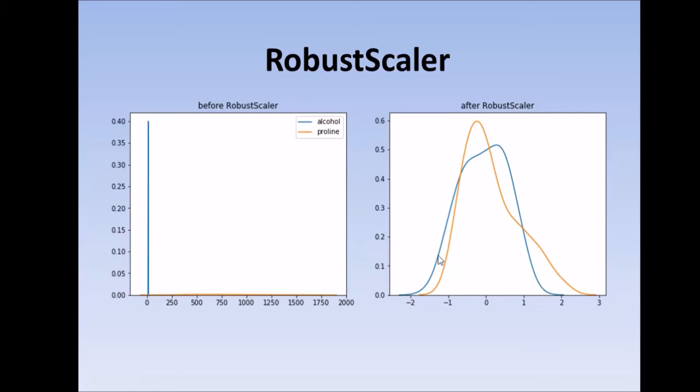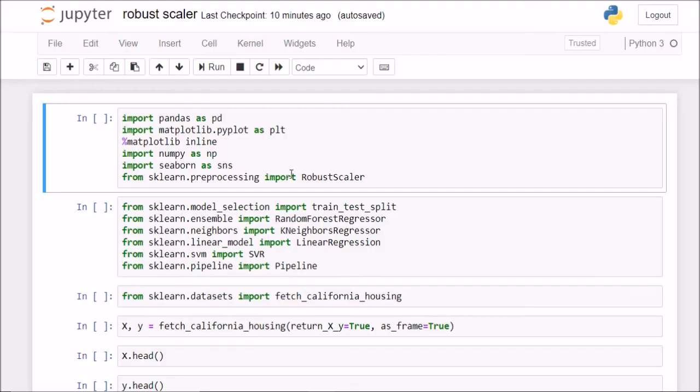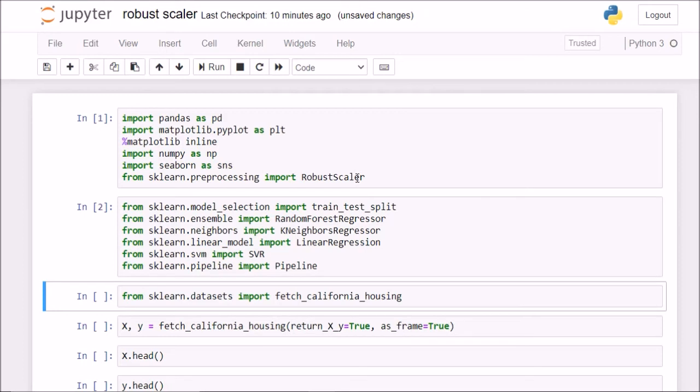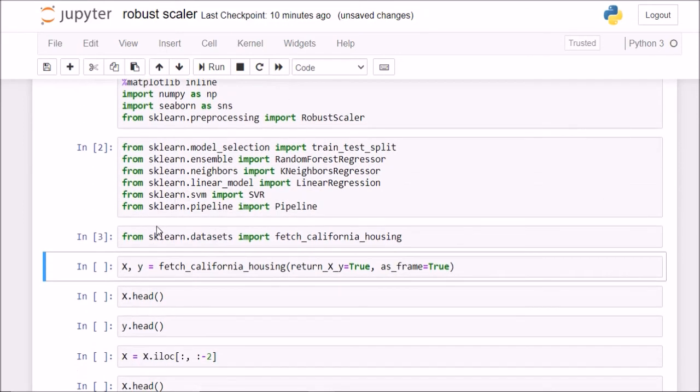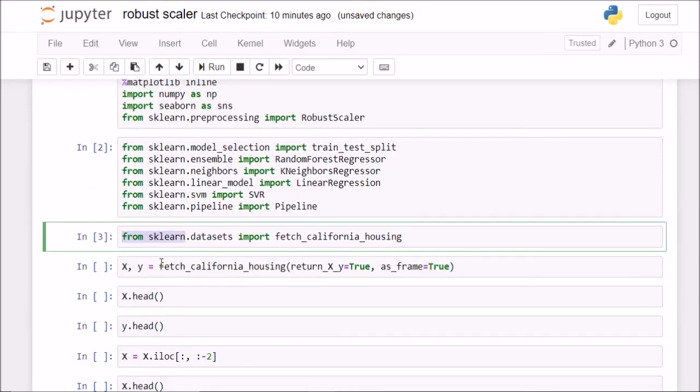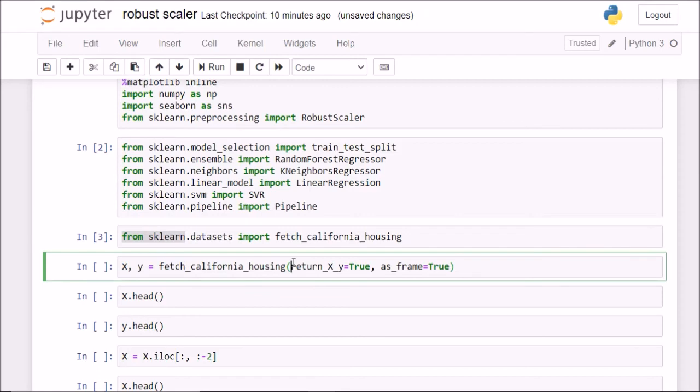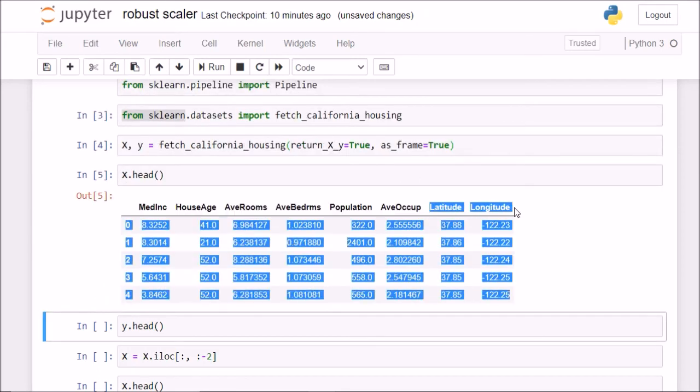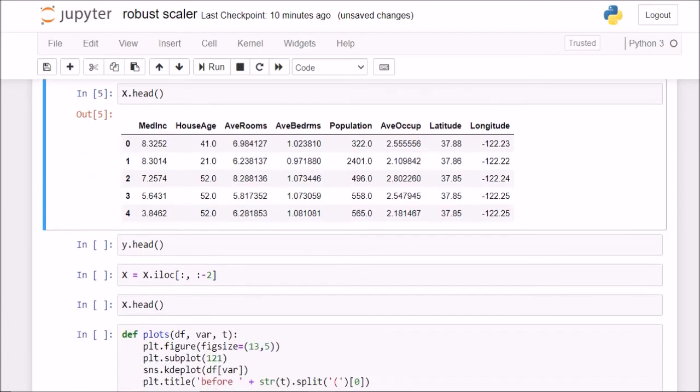So now we'll look at a practical implementation of RobustScaler. So I've imported RobustScaler here. So I'll execute this code. Then I'll execute this. Now I'll fetch my dataset from fetch California housing from sklearn.datasets. Then for x and y, I'll do the same thing as I have done before. I'll check my x.head. It has latitude and longitude as well. But I do not want them.